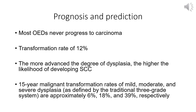Regarding prognostic and predictive value, dysplasia correlates with risk of squamous cell carcinoma development, but most oral epithelial dysplasias do not progress to carcinoma. Meta-analysis showed a 12 percent overall transformation rate. Fifteen-year malignant transformation rates by WHO three-tier grading are approximately 6 percent for mild, 18 percent for moderate, and 39 percent for severe dysplasia. Long-term presence of dysplasia increases the risk of transformation.